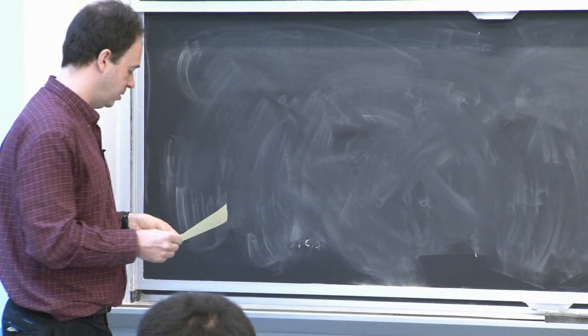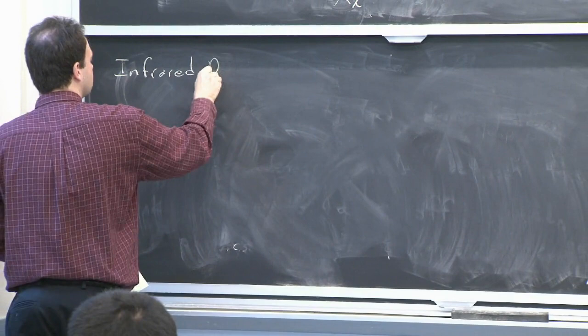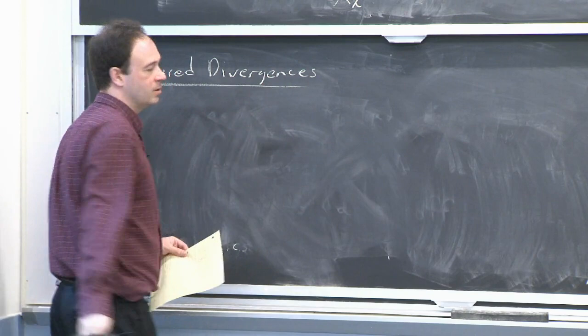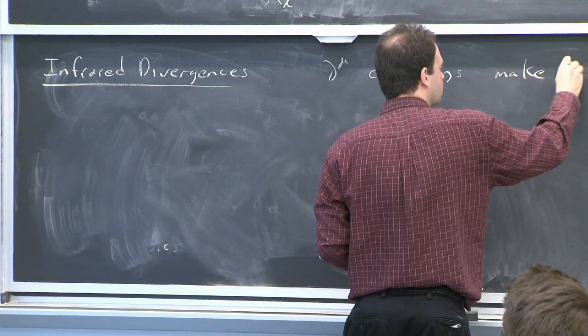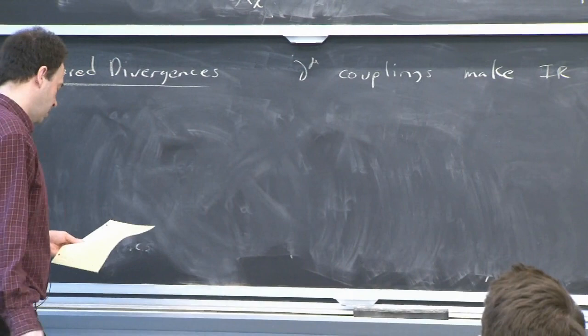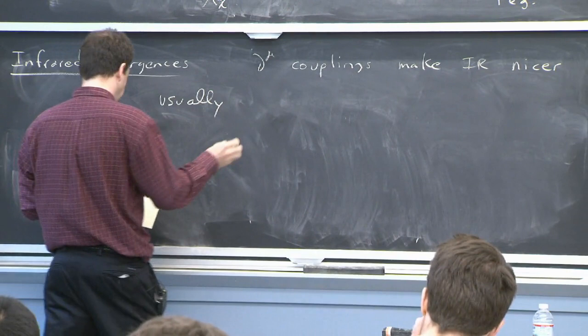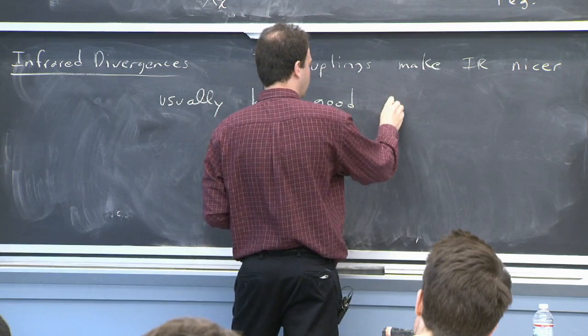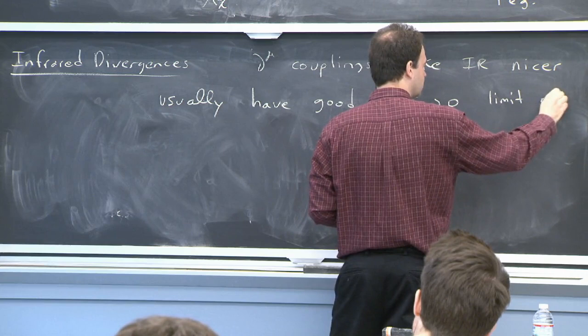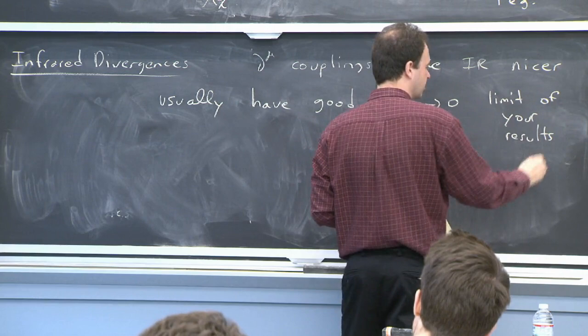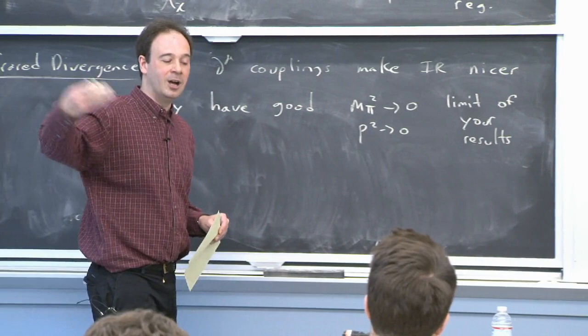Another difference from gauge theories is the structure of infrared divergences, because of the derivative couplings. You have many fewer IR singularities than in gauge theory — usually none. There is a good M_pi squared → 0 or p squared → 0 limit of results. Looking at the loop results, you get p to the fourth times log(p squared), so the log doesn't blow up because there are so many powers of p multiplying it.